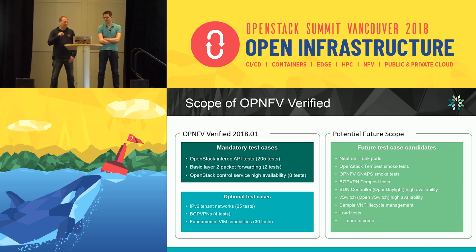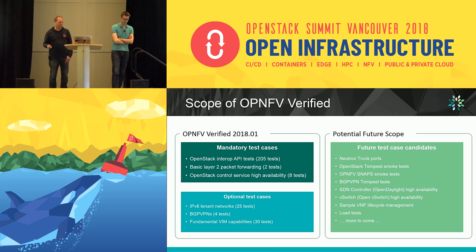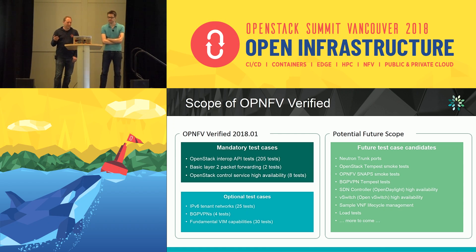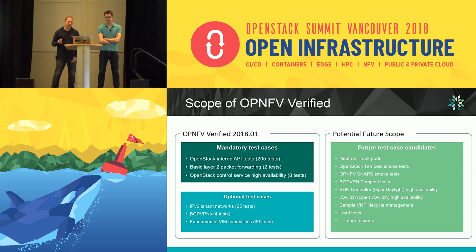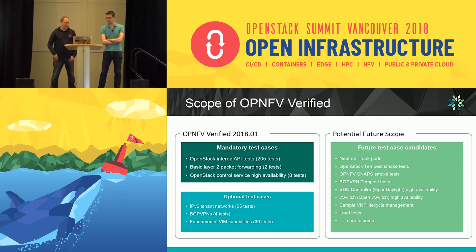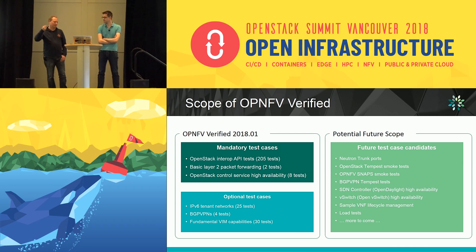There are also optional test cases, because within NFV use cases there can be sub-use cases that require additional capabilities beyond what is generally required for NFV. We have test cases on IPv6 for tenant networking, a couple on BGP VPN, and additional test cases on what we call fundamental VIM capabilities — things we want to move into the mandatory space over time, but the confidence in those test cases isn't high enough yet to make them mandatory.